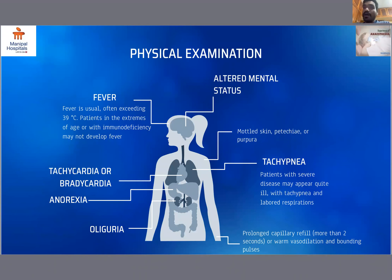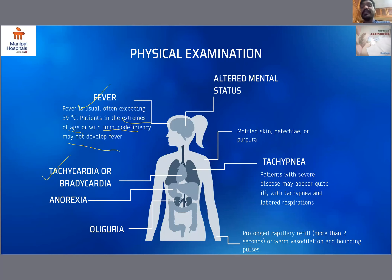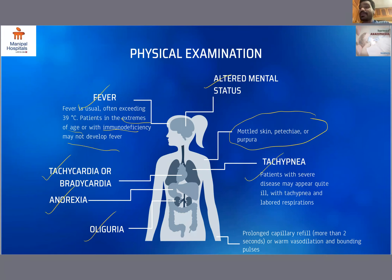On physical examination, fever is almost universal, but some patients can be totally asymptomatic — especially patients at extremes of age and with immunodeficiency diseases — and may not develop fever. Patients can present with tachycardia, and in case of severe disease with shock, they can present with bradycardia, anorexia, oliguria, and altered mental status. A small percentage of cases present with dermal problems like mottled skin, petechiae, and purpura. Moderate to severe disease presents with tachypnea and labored respiration, and some patients have prolonged capillary fill time of more than two seconds, or warm vasodilation and bounding pulses.